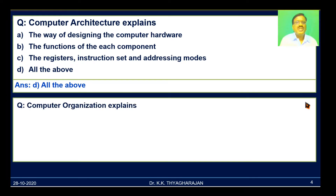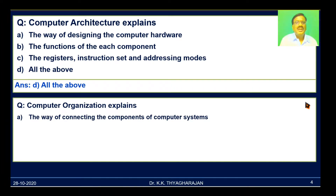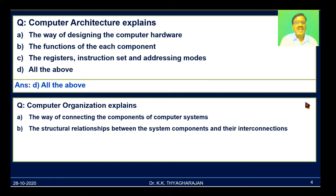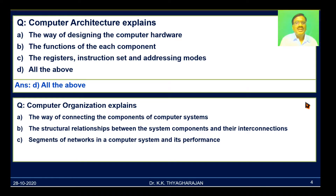The second question is: computer organization explains — A, the way of connecting the components of the computer systems; B, the structural relationship between the system components and their interconnections; C, segments of networks in the computer system and its performance. All options are correct, so the answer is D, all the above.